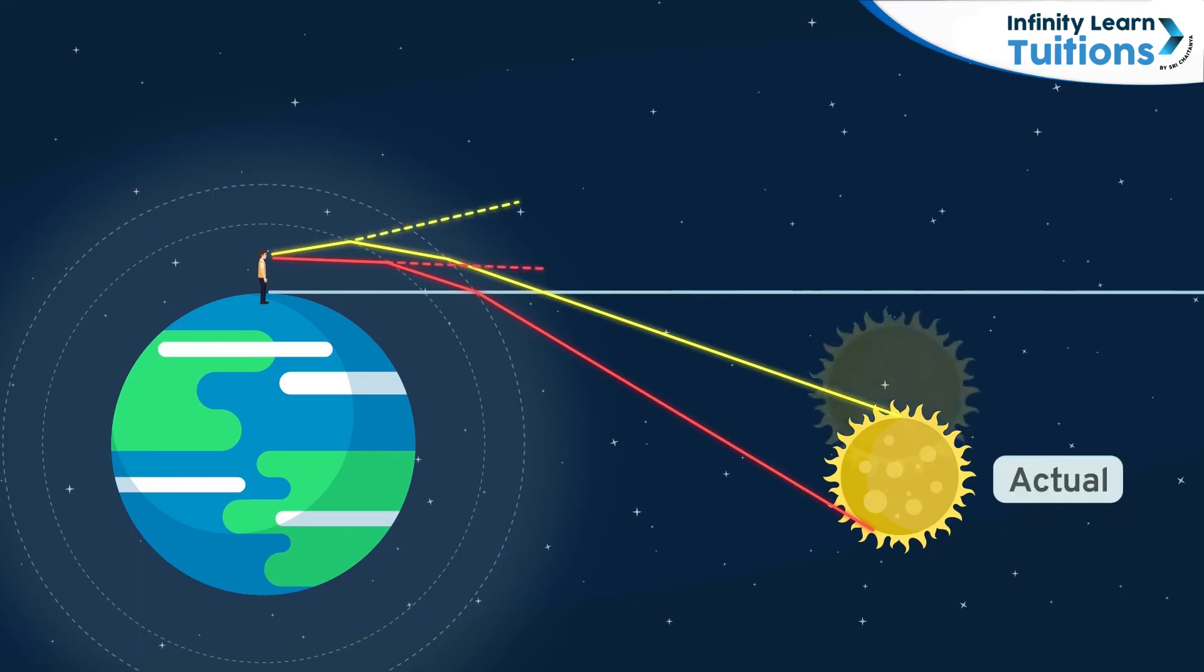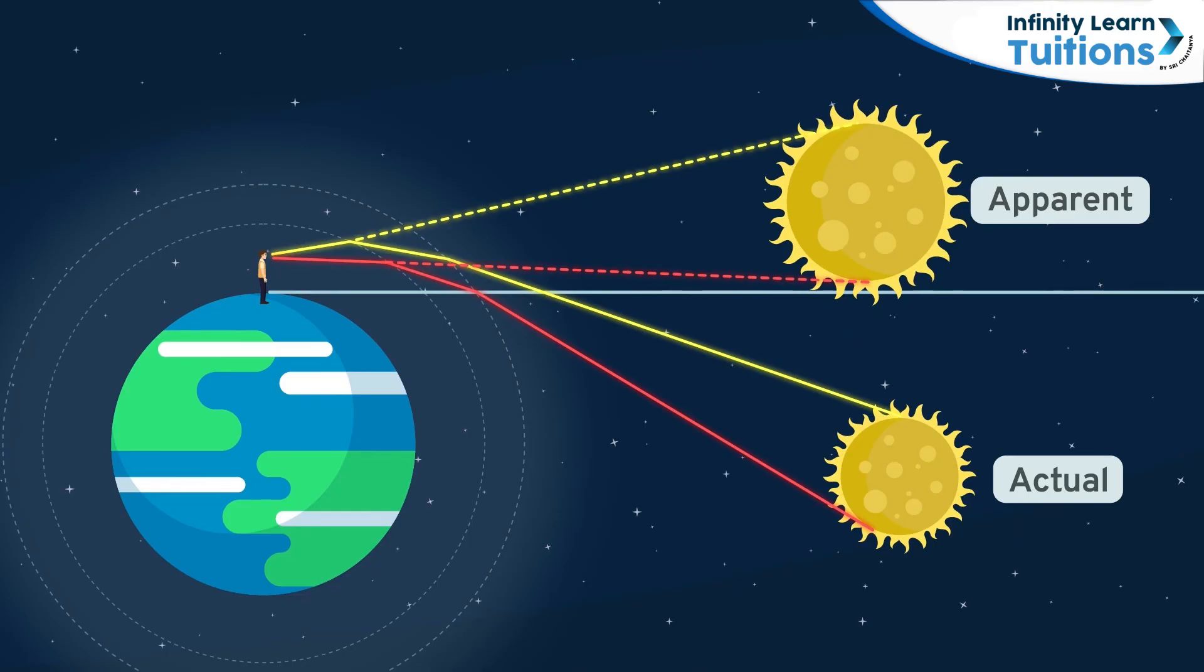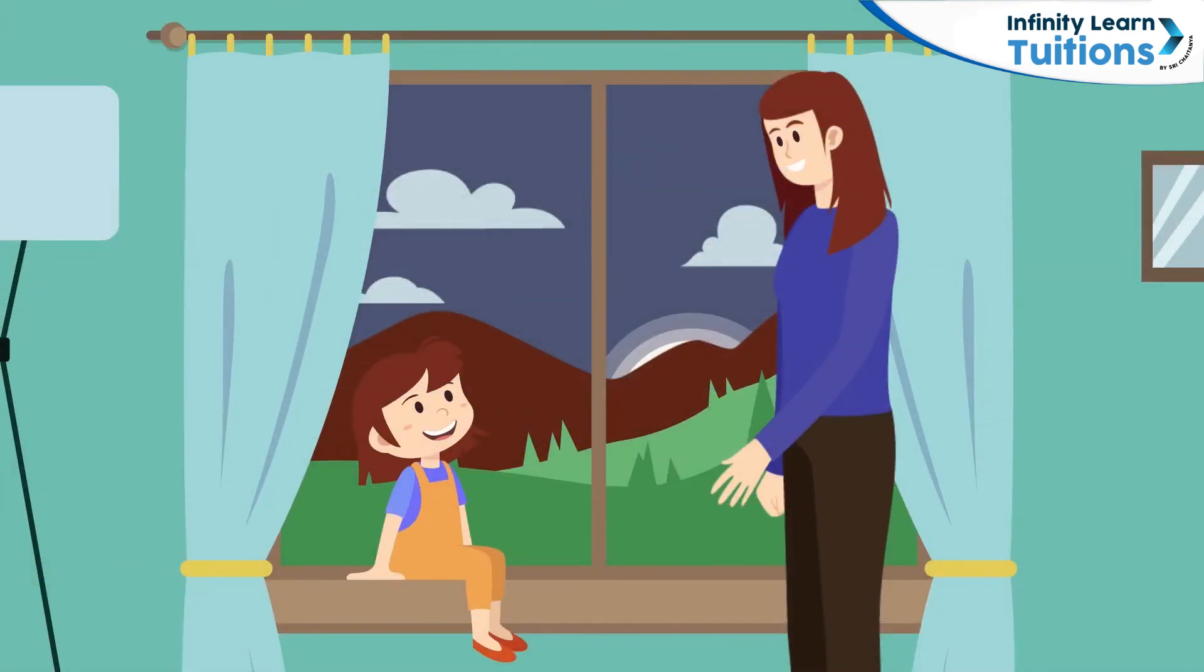Thus, the shift in the part at the bottom of the sun is more than compared to the top part which causes it to appear squashed. Veronica sure learnt quite a lot from the sunset. We hope you guys did too. That's all for this video.